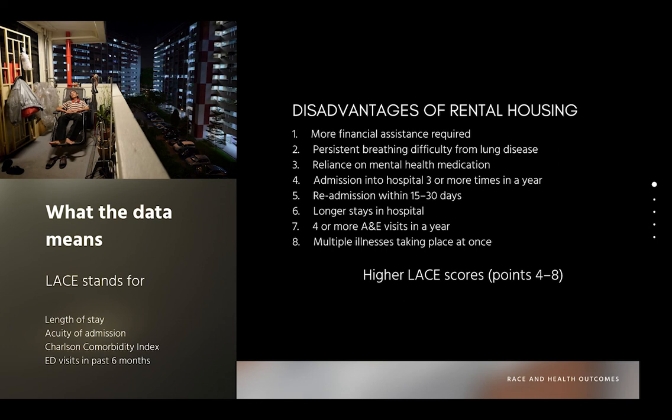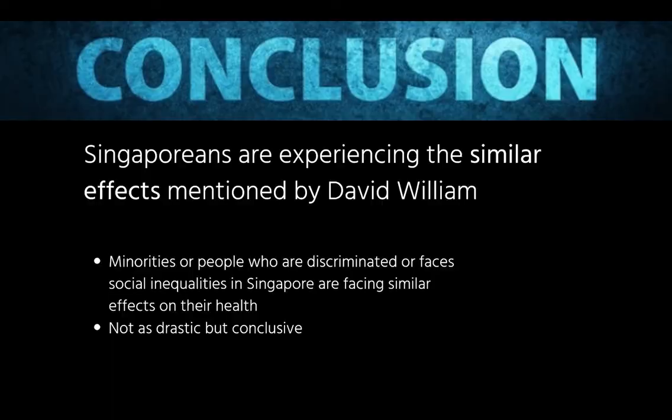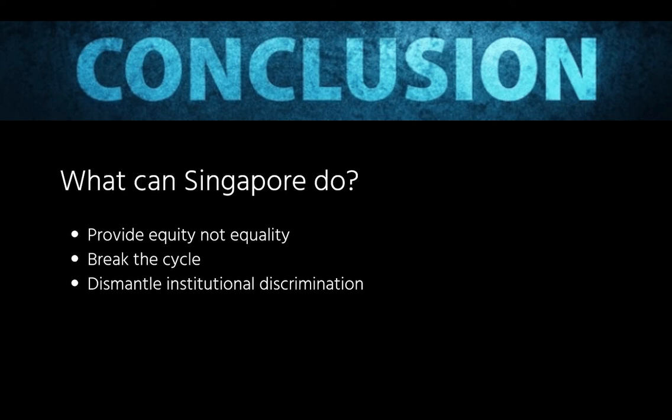From the data gathered, we can conclude that Singapore is experiencing the same effect as what David Williams argues in America. Although the effect may not be as drastic as what minorities face in America, there is still enough conclusive evidence that minorities' health in Singapore is being affected. Singapore can consider implementing the steps mentioned by David Williams — instead of providing equality, we should start providing equity among those disadvantaged. We should dismantle institutional discrimination, such as labelling schools as Chinese or Malay schools, and break the cycle of poverty. Thank you for your time.